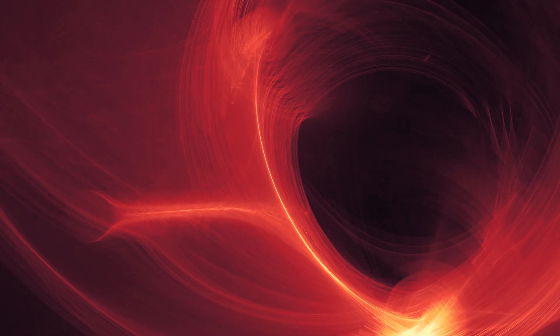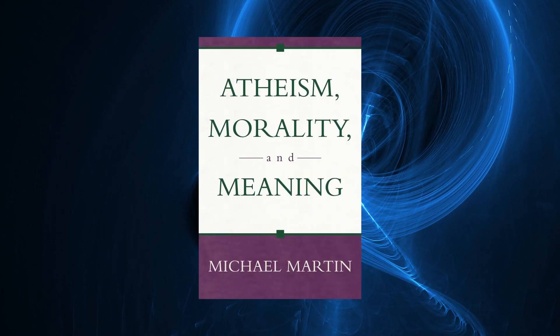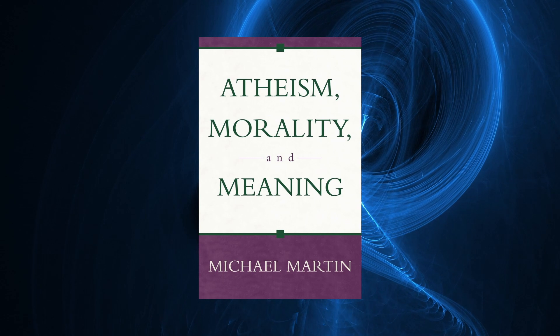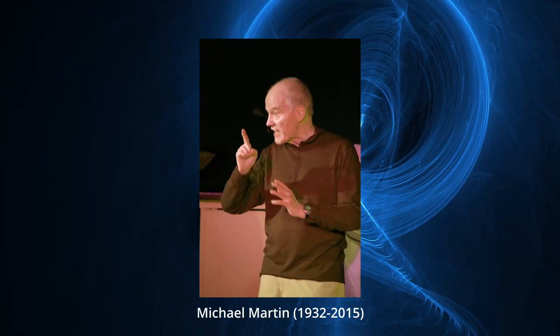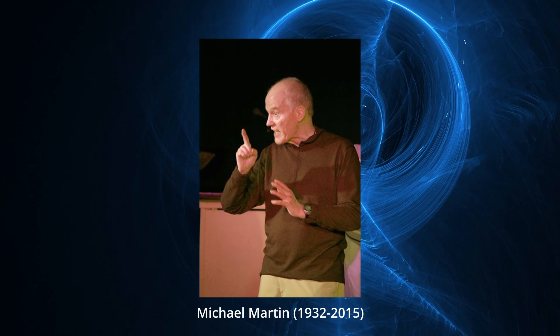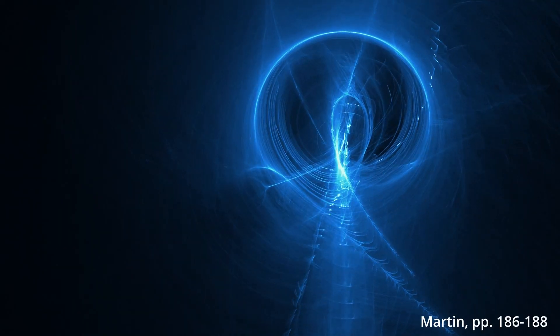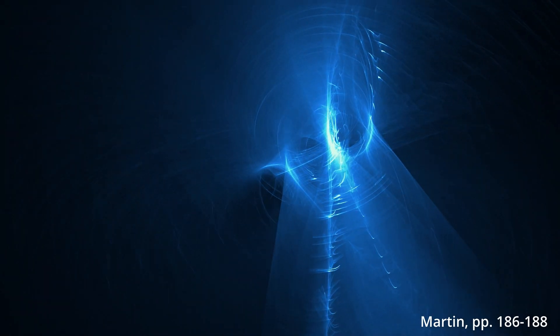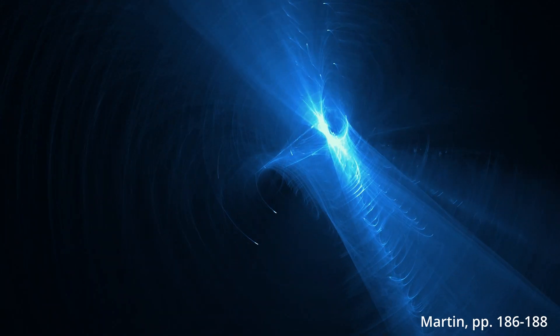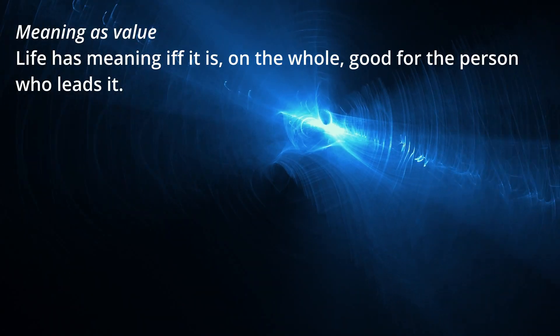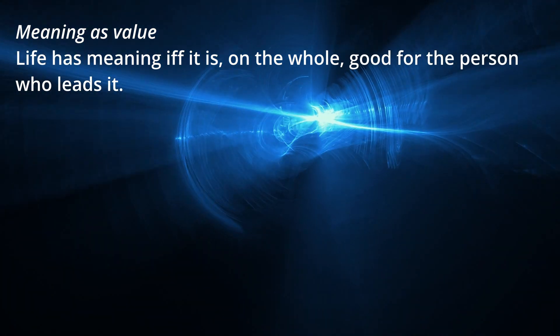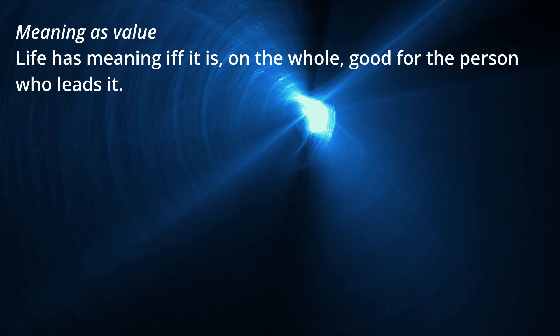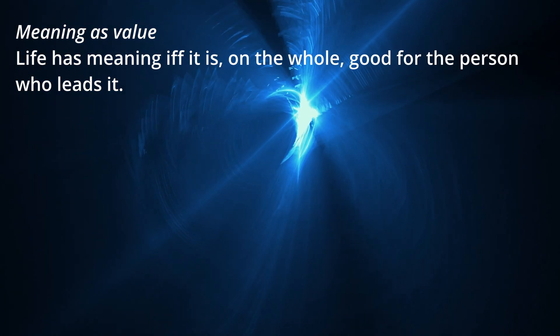But first, we have to turn to the subject of what it means for life to have meaning in the first place. Our source for much of what follows will be Atheism, Morality, and Meaning by Michael Martin, published by Prometheus Books in 2002. Martin, one of the most prolific and most rigorous atheist philosophers of the last half century, distinguished between two kinds of meaning: meaning as purpose, where the meaning of life is your purpose in life, and meaning as value, where the meaning of life is what value life has. We can say that life has value if and only if it is on the whole good for the person who leads it. This means, of course, that value meaning is relative to the person leading it.